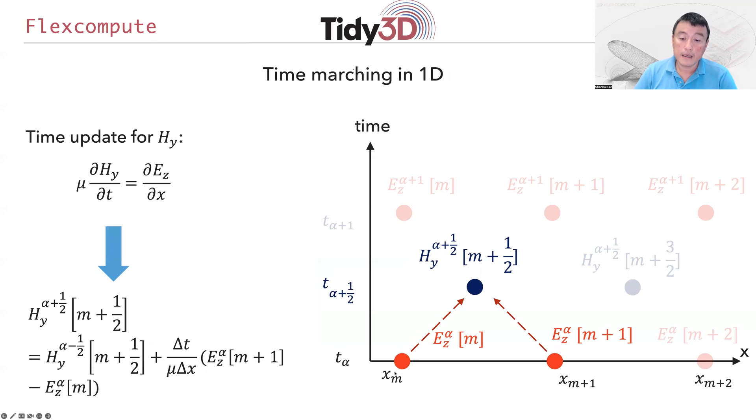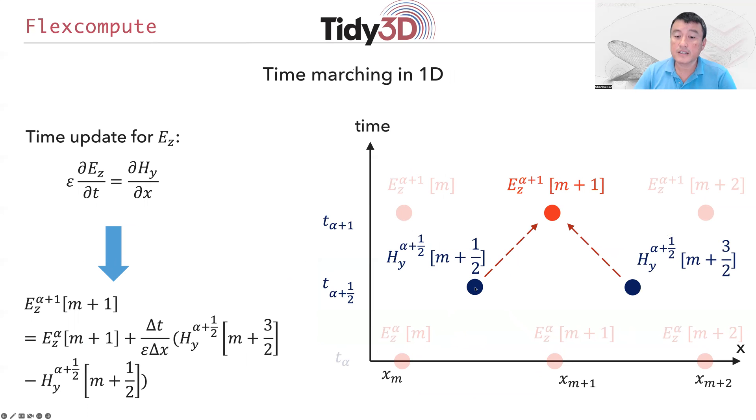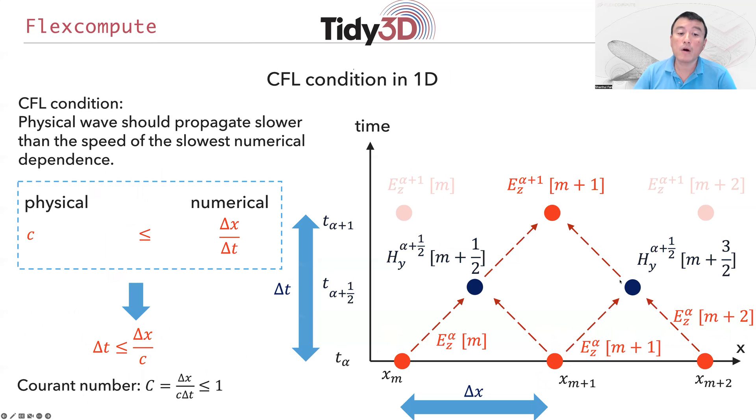In the first half time step, we go from E to H, and in the second half time step, we go from H to E. If you summarize this, this is how the data dependency looks like.